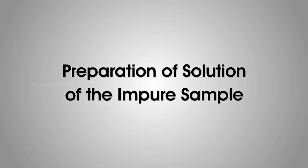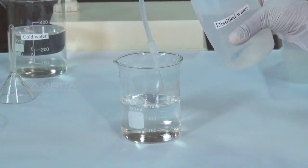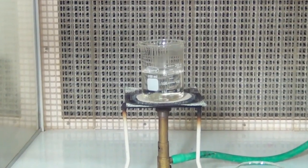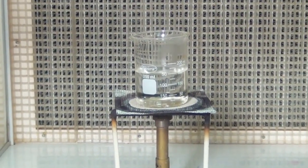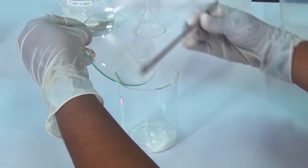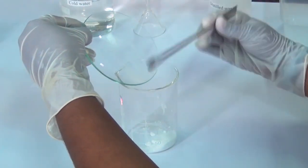Procedure - Preparation of solution of the impure sample: Take about 150 ml of distilled water in a beaker. Boil the water in the beaker over the Bunsen burner. In another beaker, take about 3 g of crude sample of benzoic acid.